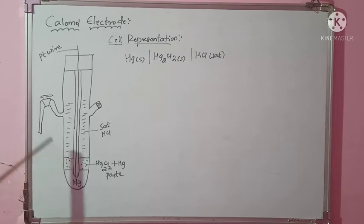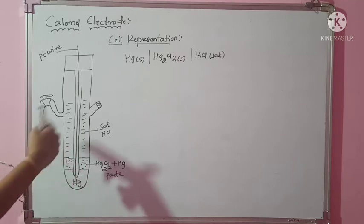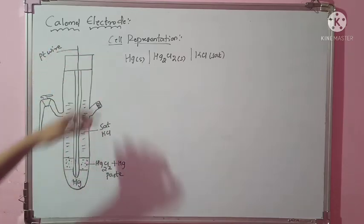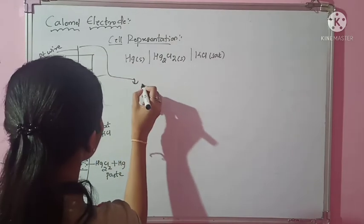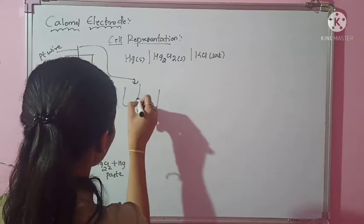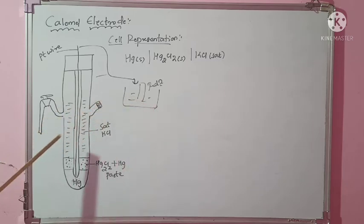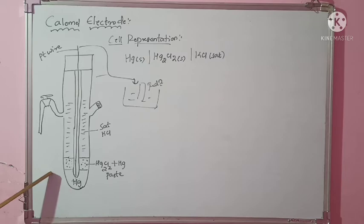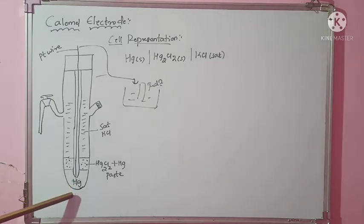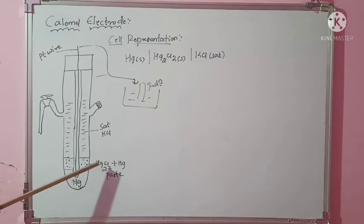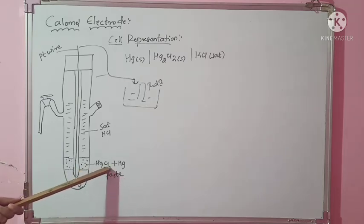Now let's come to the working. There are two possibilities: this electrode can undergo either oxidation or reduction depending upon the circumstances. If I connect this cell to another electrode that is undergoing reduction, then this calomel should undergo oxidation. If it is undergoing oxidation, it means it should lose electrons. Now, out of the species present — K+, Cl−, Hg2+, and Hg — which will lose electrons?